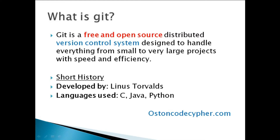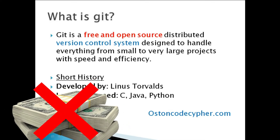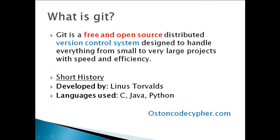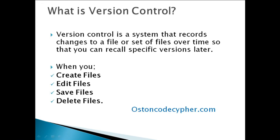Being free means you don't need to pay any money to anyone to use this tool. Another key term is version control, which I'll be explaining in the next slide. But first, a short history: Git was developed by Linus Torvalds, written in C, Java, and Python. So what is version control?